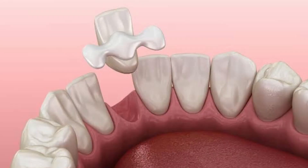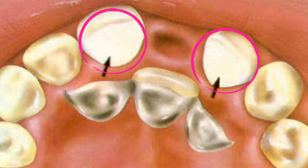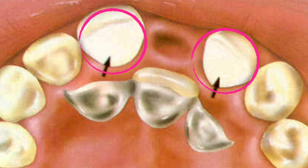Rochette's Bridge, Maryland's Bridge, and Virginia Bridge all fall under a single category. Unlike conventional bridges, these do not have an abutment crown. Instead, they only have wings that are attached to the lingual surface of the abutments. There is very minimal reduction, no disturbance to the facial surface — only the lingual surface is slightly prepared.